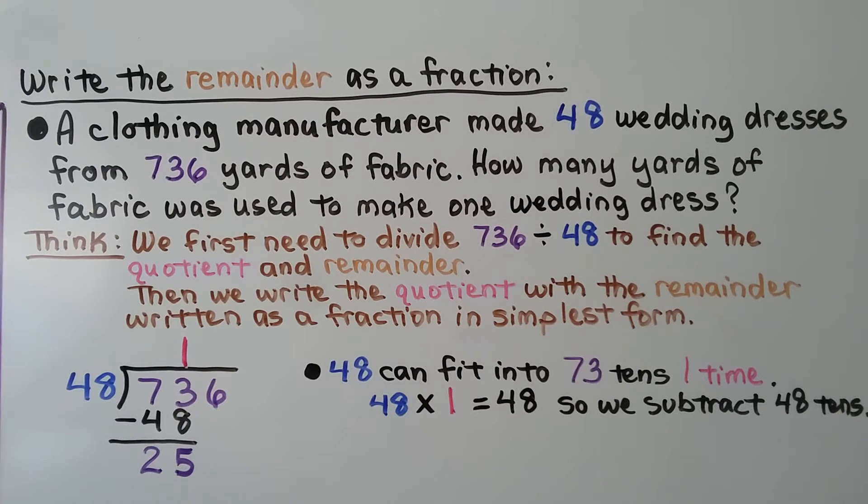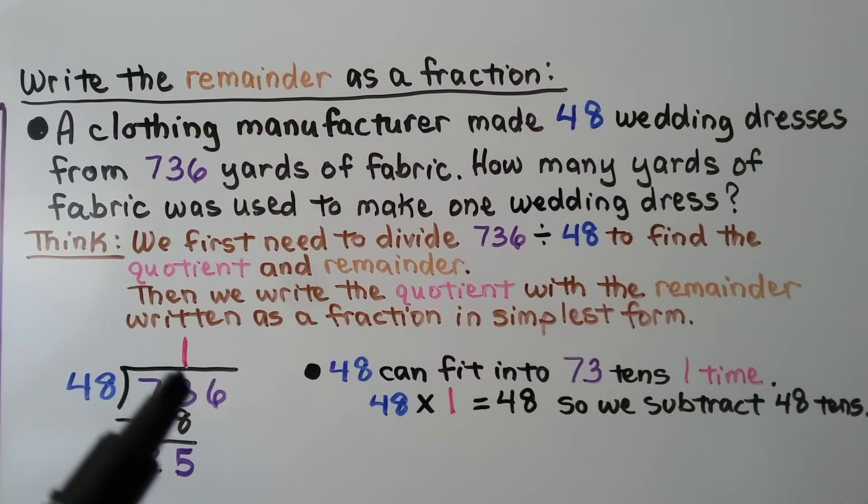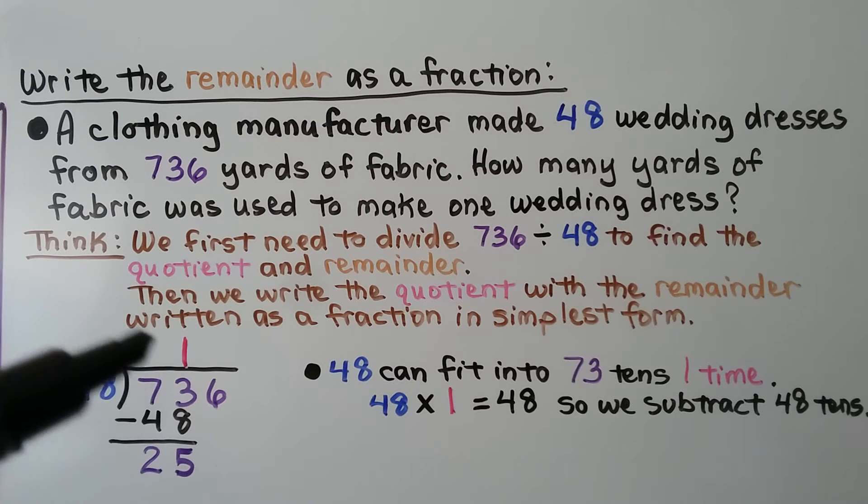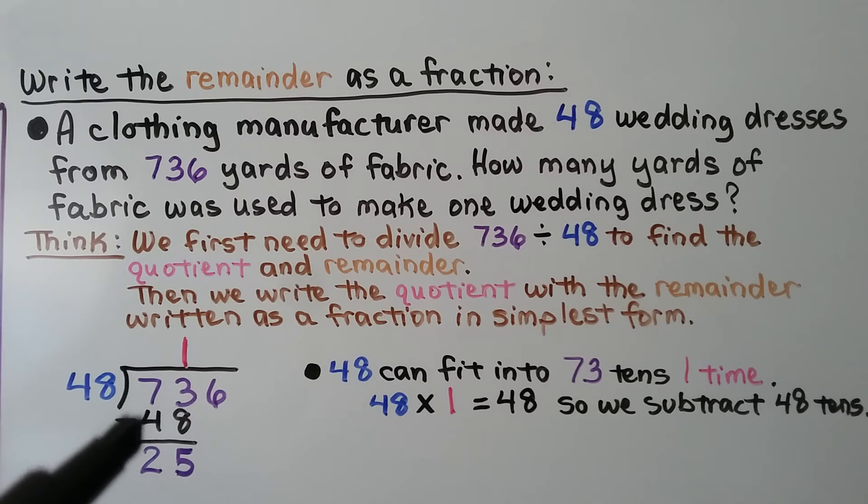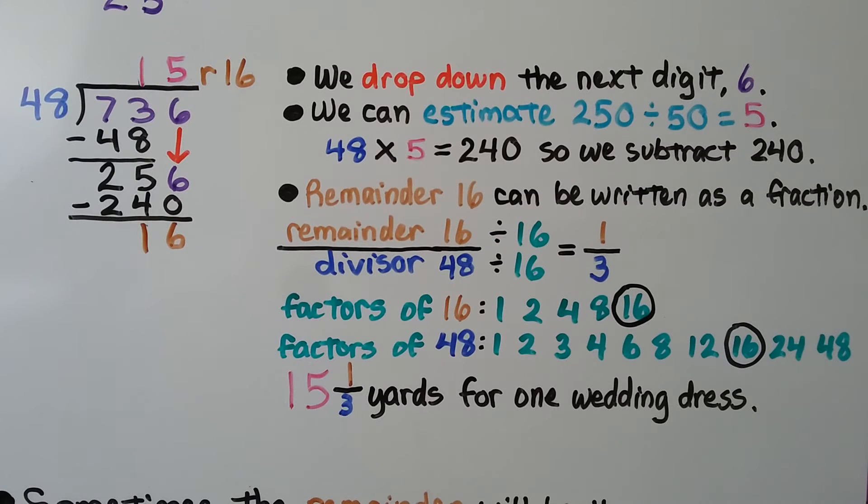Here's an example of writing the remainder as a fraction. A clothing manufacturer made 48 wedding dresses from 736 yards of fabric. How many yards of fabric was used to make one wedding dress? We first need to divide 736 by 48 to find the quotient and remainder. Then we write the quotient with the remainder written as a fraction in simplest form. We have 736 divided by 48. 48 can fit into 73 10s one time. We write a 1 for our quotient above the 10s place. 48 times 1 is 48. We subtract that and get 25 10s.